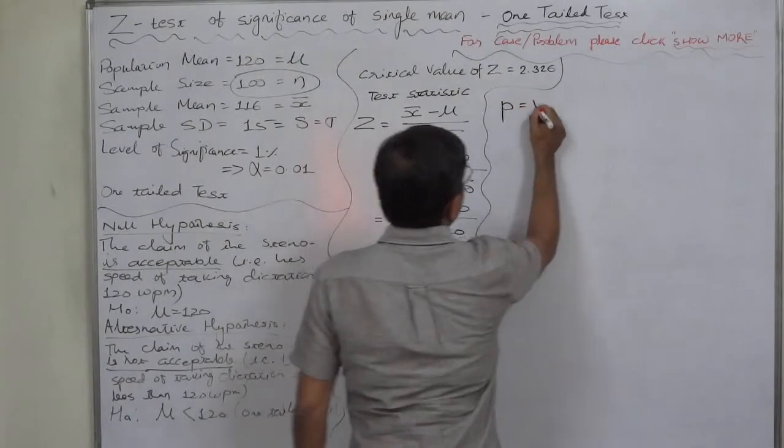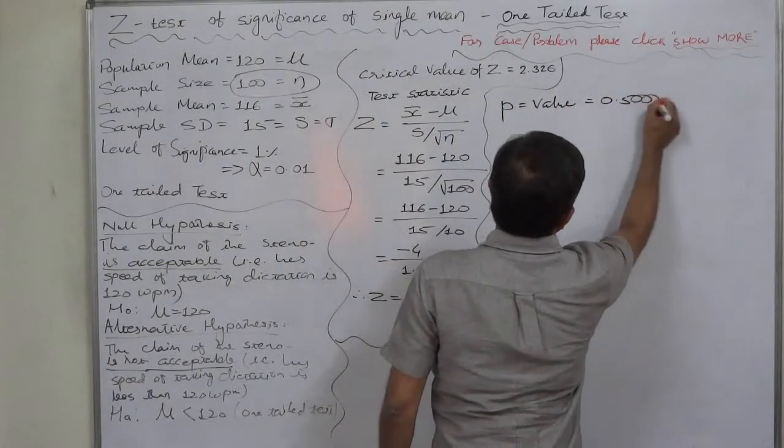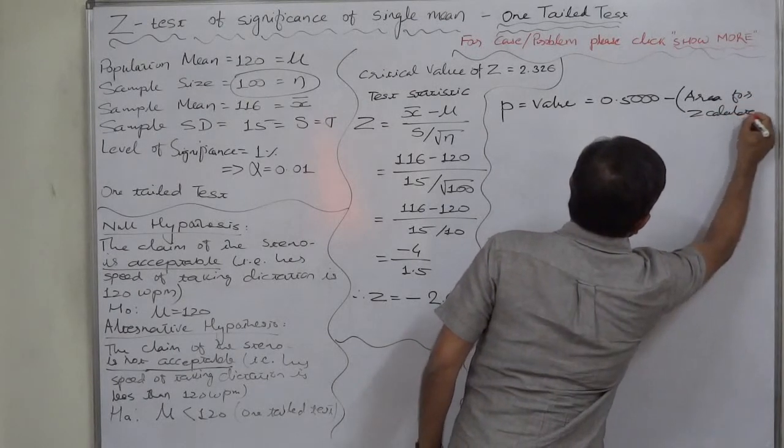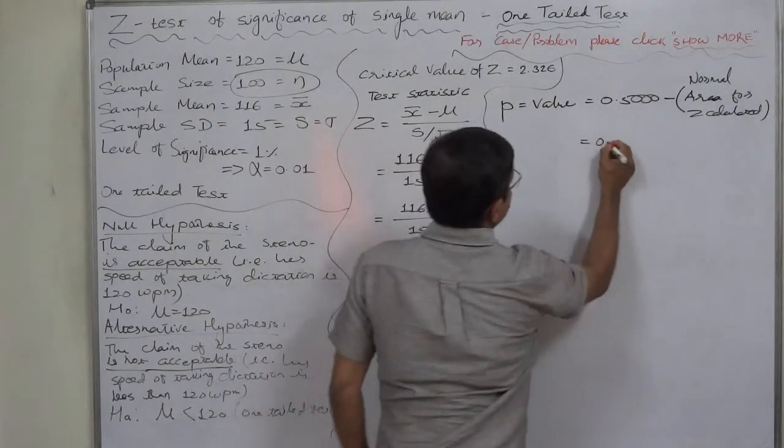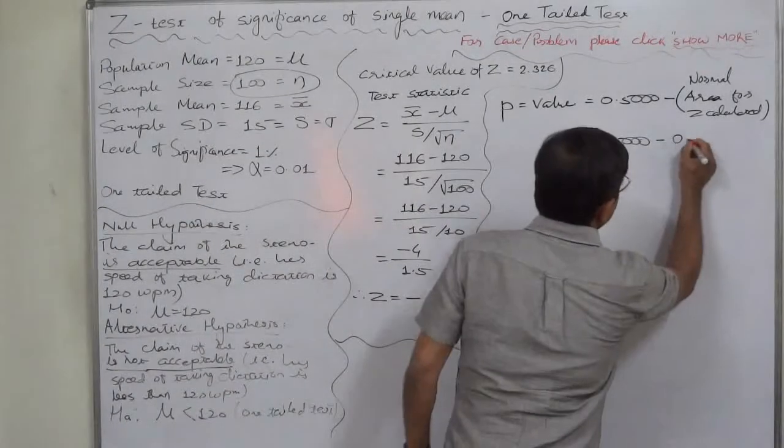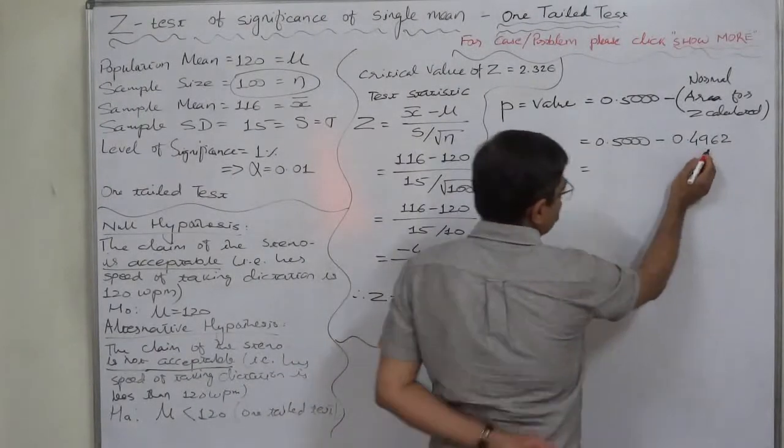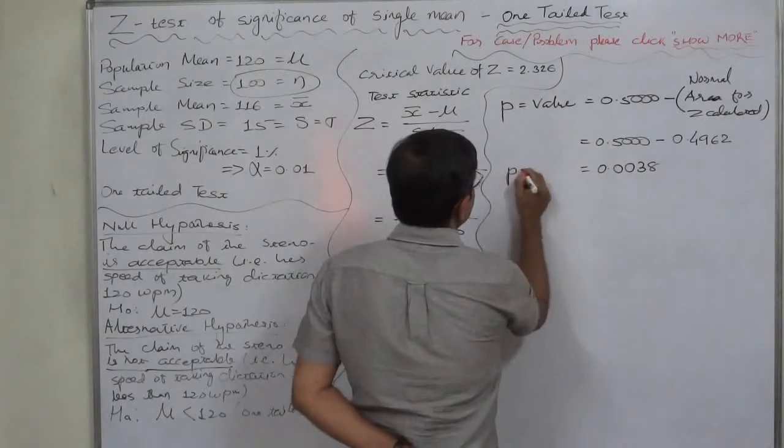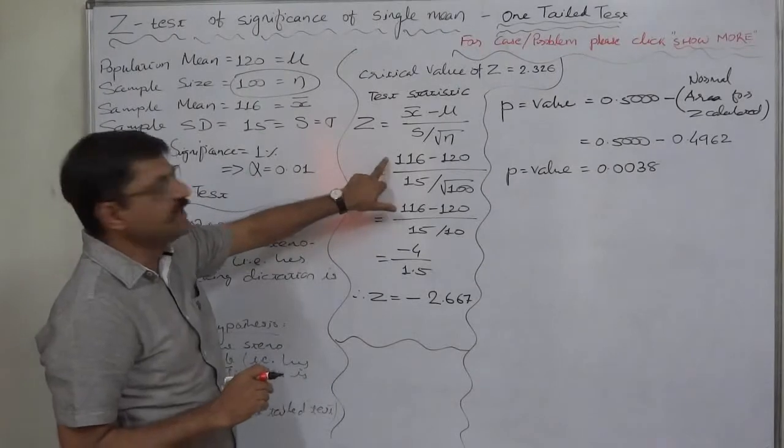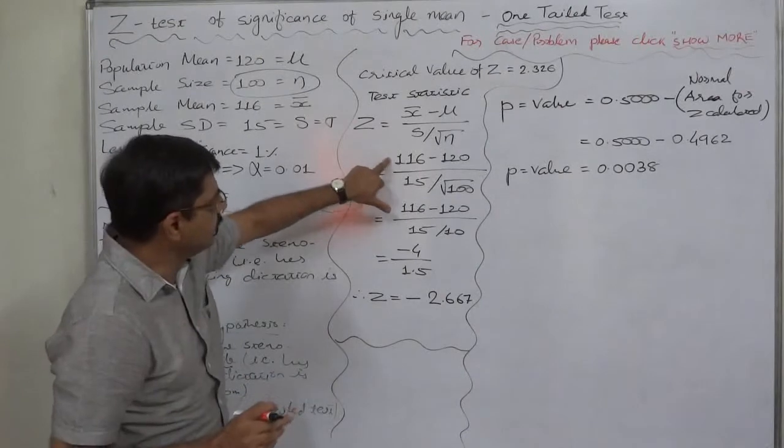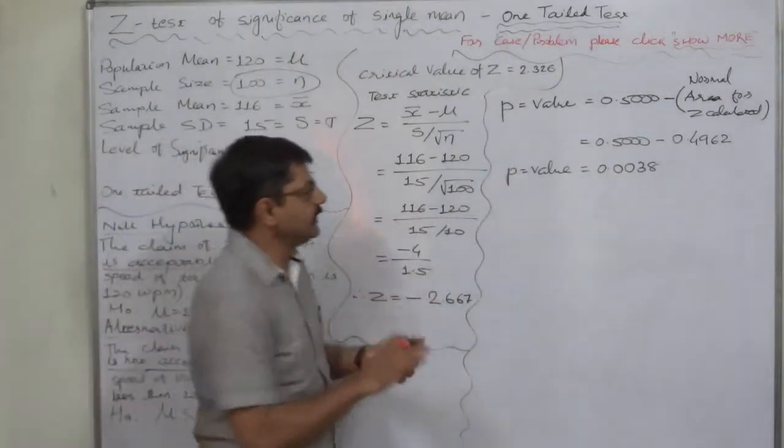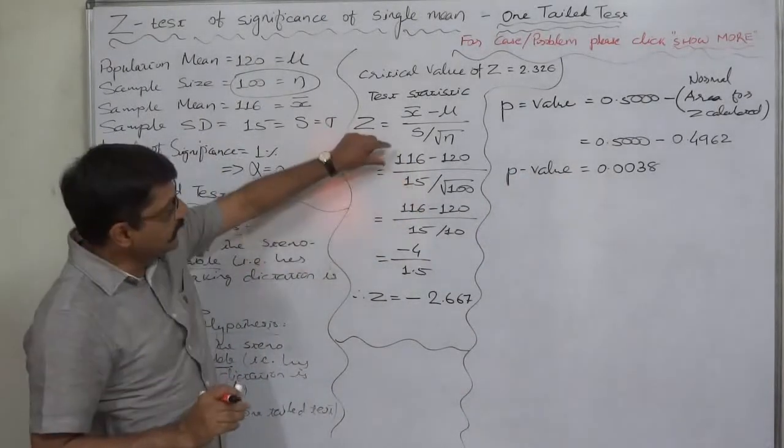For using the p-value method, we have to consider the calculated z as z-score of our normal bell-shaped distribution and we should find out the relevant area. The formula of p-value is 0.5 minus area, which is 0.5 minus 0.4962. Area for 2.67, I am taking 0.4962. It is something like 5000 minus 4938, it comes to 0.0038. P-value means the probability of sample mean taking at least this much value. What is the probability that the sample mean is 116 or more? This kind of problem of normal distribution, if we consider or think, this is the p-value.